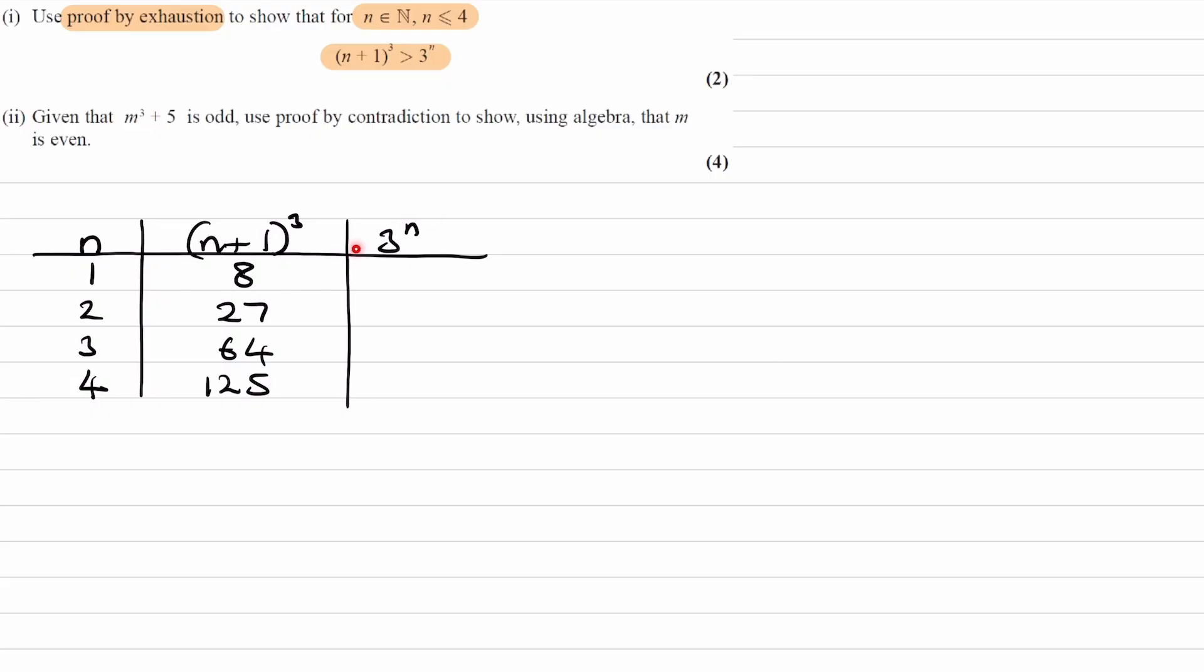And then we can do 3 to the power of n, so 3 to the power of all of these numbers. 3 to the power of 1 is 3, 3 to the power of 2, to the power of 3, and 4.